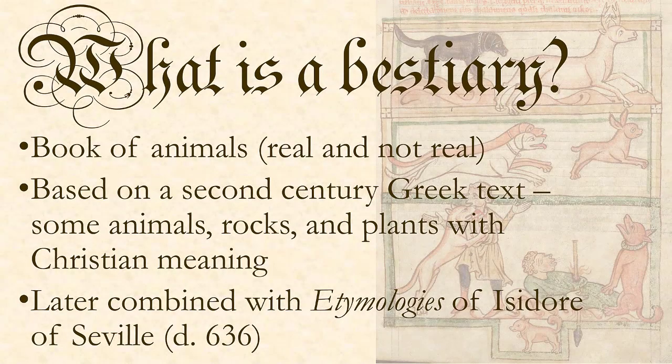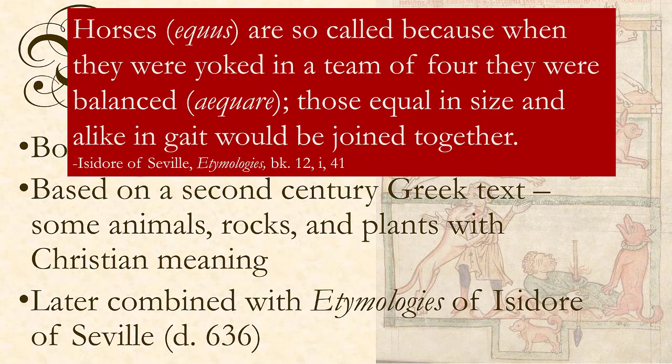Let's talk about what Isidore said about animals. He talks about horses — equus in Latin — and says horses are so-called because when they were yoked in a team of four, those equal in size and alike in gait would be joined together. He sees the etymology of equus coming from equare. Isidore of Seville is almost always wrong — he was essentially trying to explain the world through language, which is not always accurate.